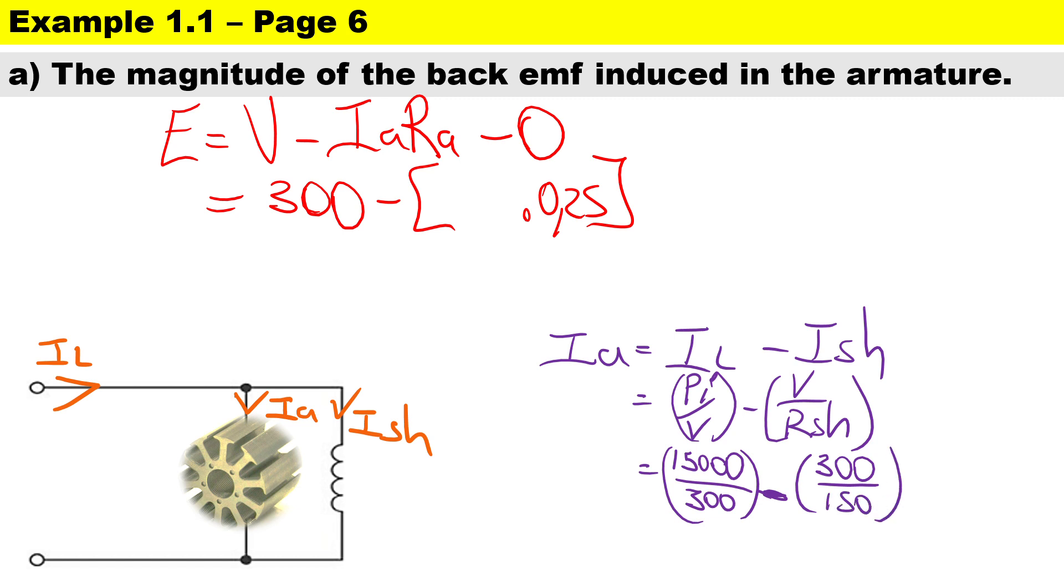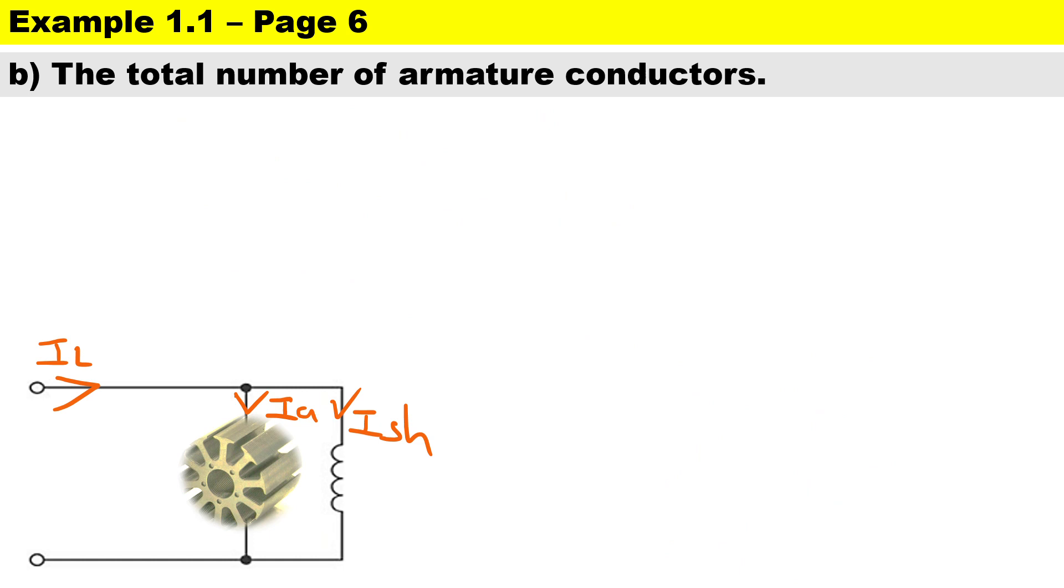So we end up with 50 amperes minus 2 amperes, and that gives us 48 amperes for our armature current. So we substitute that here, 48 amperes, and therefore our back EMF is going to be 288 volts.